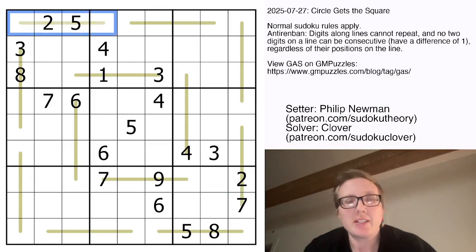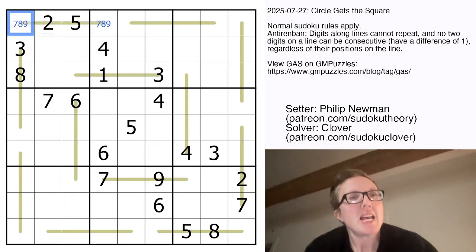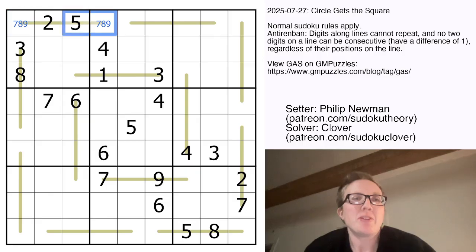We're going to start in the top left corner here. Because there's a 2, this line can't have a 1 or a 3. Because there's a 5, this line can't have a 4 or a 6. So the only digits it can possibly have are 7, 8, and 9. Now it can't have an 8, because if there was an 8, the other digit, either 7 or 9, would have to be consecutive with the 8. So that would be broken. So that's going to be my 9, and that will be my 7.